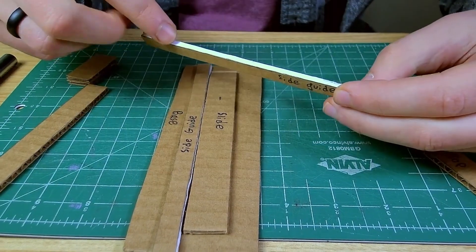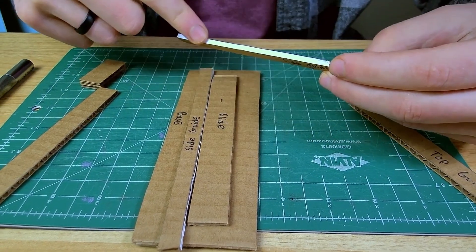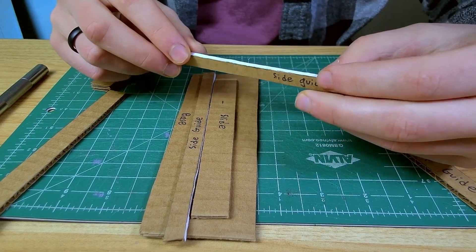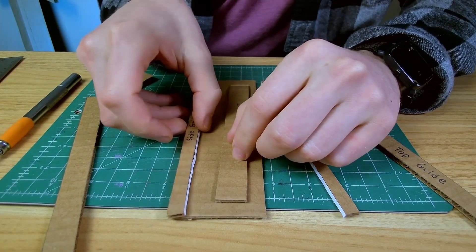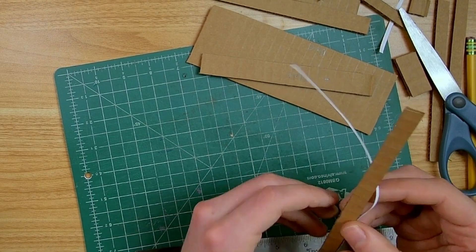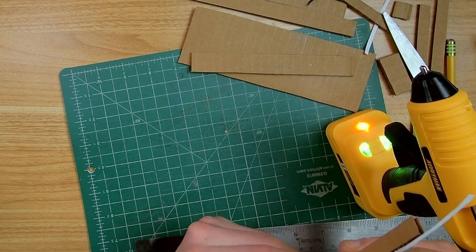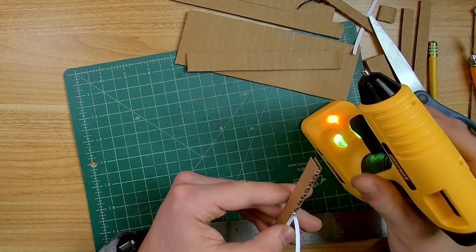You'll notice that I also put a piece of paper down the inside of this to reduce the friction a little bit. Just be sure that when you're gluing this paper on you do it very carefully, especially if you're using hot glue, and you don't get like globs of glue making it super bumpy.